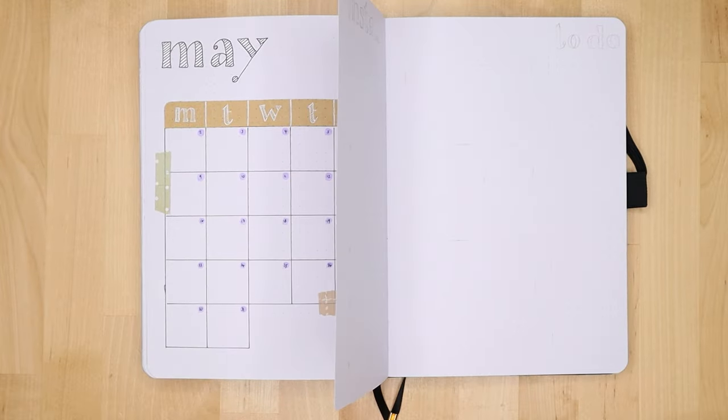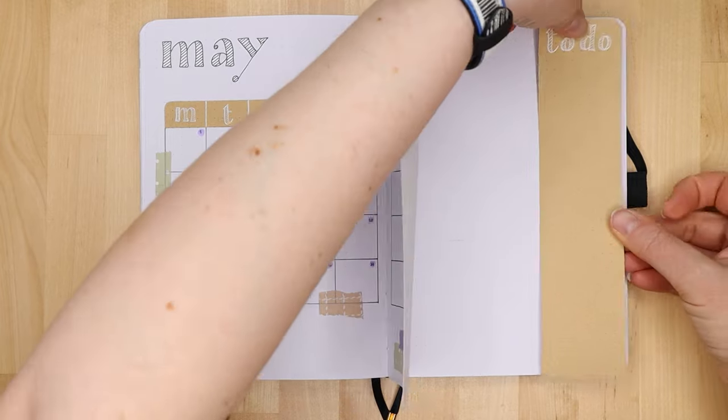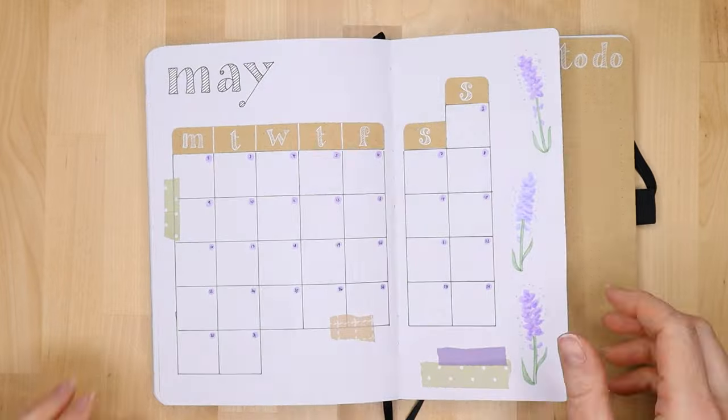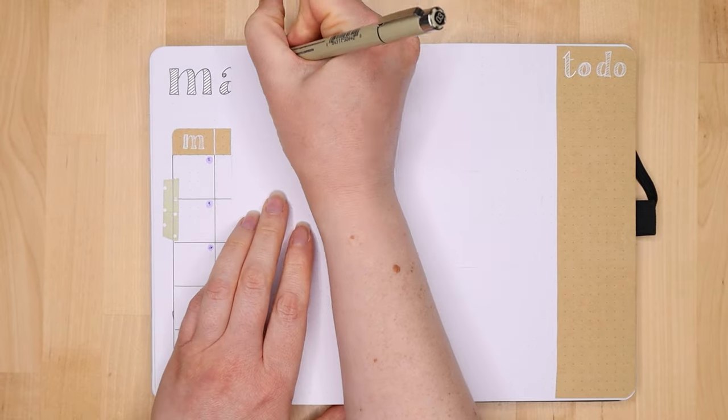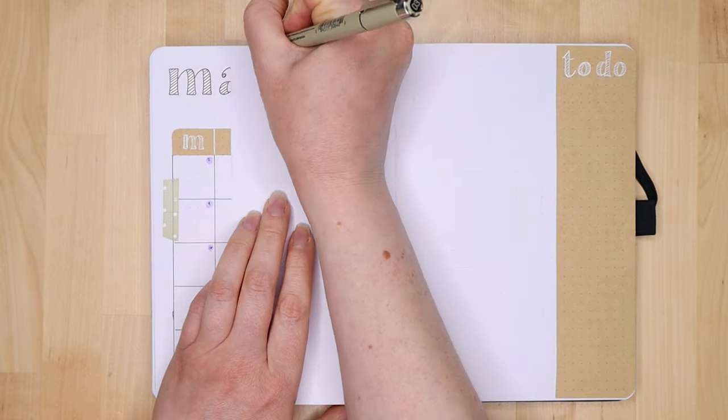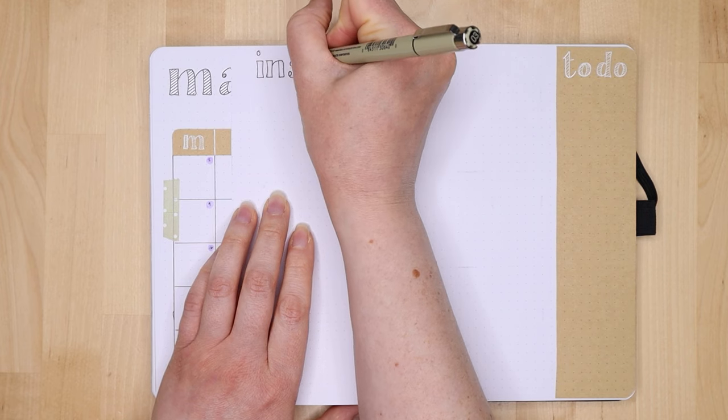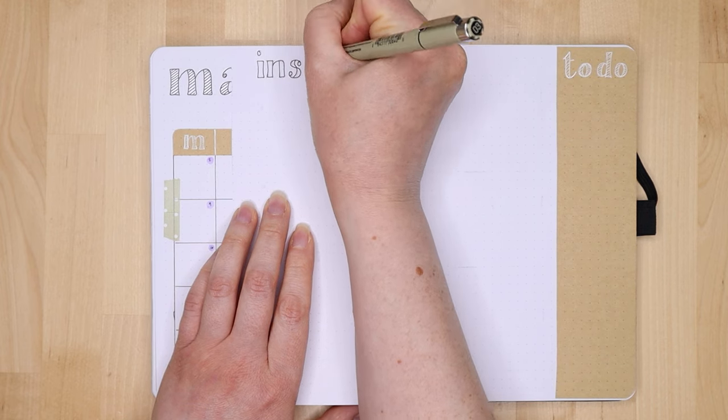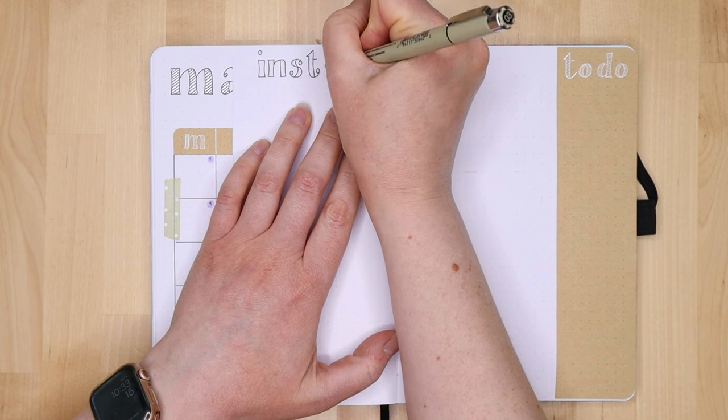So on the flip side of the dutch door this is my Instagram planner page, my notes section where I might just do a little bit of a brain dump on either my content or things that are really important or I need to remember.